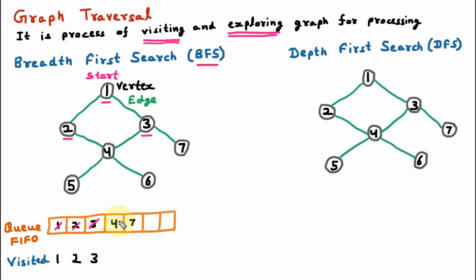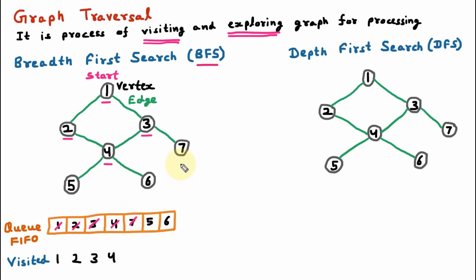Now we take out the next vertex from the queue, which is 4. We are on vertex 4 and perform visiting and exploring. We mark vertex 4 as visited, then explore vertex 4 to find its neighbors, which are vertex 5 and vertex 6. We put vertex 5 and vertex 6 into the queue. We take out the next vertex from the queue, which is 7. We mark 7 as visited and explore it, but there is no further neighbor of vertex 7.